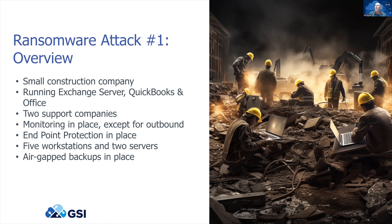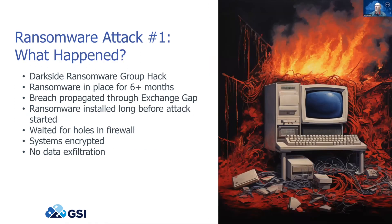Well, they did get hit. The Dark Side ransomware group got into this system. There were two faults that allowed this to happen. The first was an Exchange server patch that failed — it looked like it had applied successfully, but digging deeper, the patch had not applied properly. The hacking group got in through there and managed to install their software. The problem was it couldn't communicate back home because the firewall rules did not allow that kind of traffic — it was on port 3389.